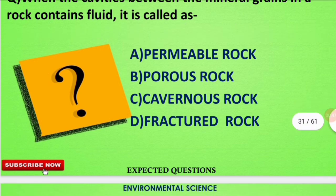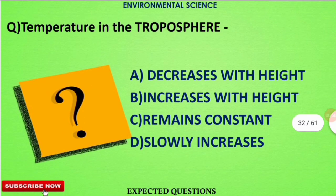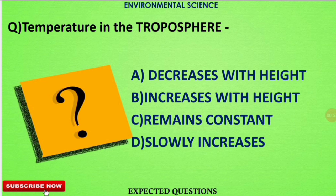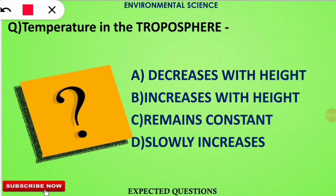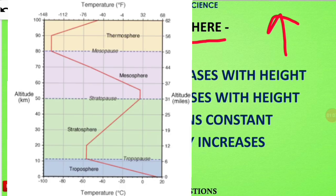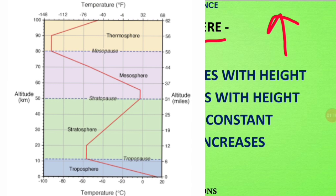The second question is: the temperature in the troposphere — does it increase or decrease with height? The correct answer is option A. The temperature in the tropospheric region decreases as we move upward. In the stratospheric region it increases, and from troposphere to stratosphere to mesosphere, the pattern is: decrease, increase, decrease, then increase again.